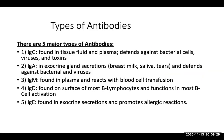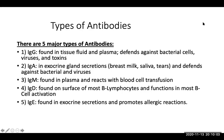There are five major types of antibodies called immunoglobulins: IgG, IgA, IgM, IgD, and IgE, found in different parts of the body. IgG is found in tissue fluid and plasma. IgA is found in exocrine secretions like saliva and tears. IgM is found in plasma to react with blood cell transfusions. IgD is found on the surface of most B lymphocytes. And IgE is found in exocrine secretions to promote allergic reactions. And that's the end of this chapter — thanks for listening.